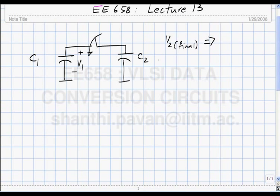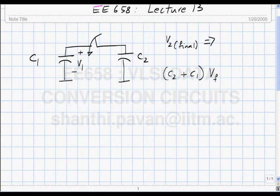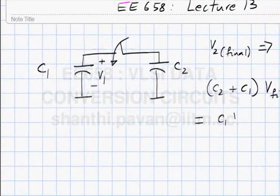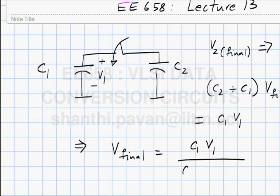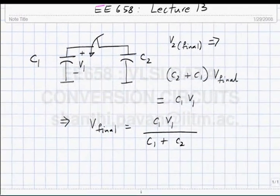Charge conservation. When I short the two capacitors, the voltage across both must be the same, which means (C2 + C1) times V_final must equal the charge initially present, which was C1·V1. So V_final is simply C1·V1 divided by (C1 + C2).